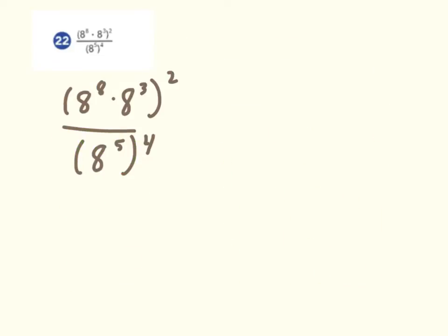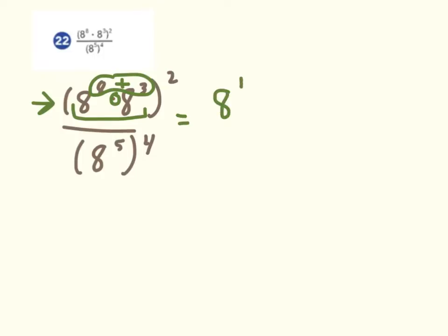Next up was number 22, and there were a lot of steps in this problem. You want to begin in the numerator and inside the parentheses. The bases are the same and we're multiplying, so we can use the product rule — keep the base, add the exponents. That gives us 8 to the 11th power, and the rest of the problem is raised to the 2nd power.